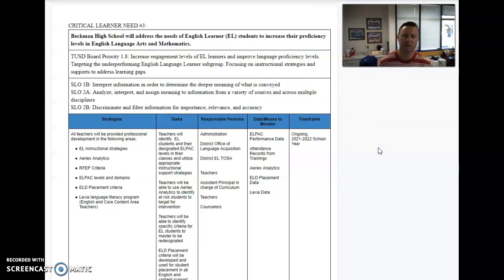And so what we kind of discussed was this idea of focusing on one group that essentially, if you Venn diagrammed it, that covers a lot of different subgroups. So our EL students, if you look at the data on them, are often students that are socioeconomically disadvantaged. A lot of times they're in special ed. So this English learner group.